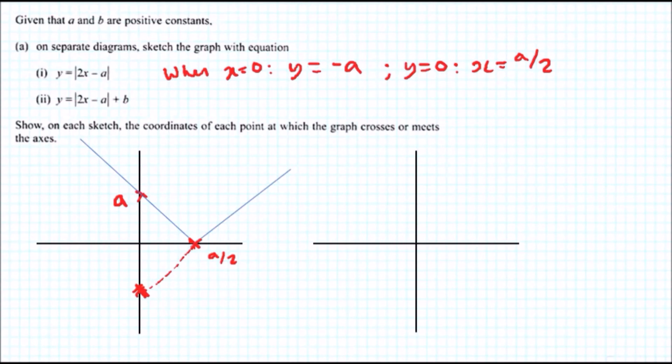And this will be a over two. Now for the second equation it's the same thing, except now we've raised the whole equation, the whole system, by plus b. So this entire shape will be reflected here except it's raised by level b. So literally I would just copy this entire shape.